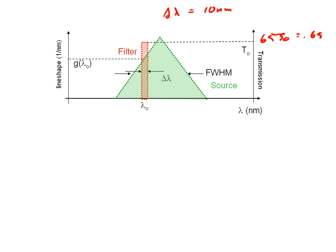Well, this is pretty straightforward. We know from our discussion on power, basically, the line shape at the peak, g peak, is equal to 1 over the full width half maximum of the source right here.